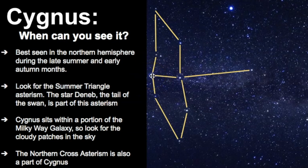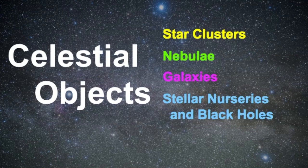In this video we're going to focus on the different types of nebulae, planetary nebulae, black holes, and other objects that are in the boundaries of this constellation. If you want to learn more about how to find this constellation in the sky, be sure to go visit that video. Now let's dive in and look at the celestial objects within Cygnus. We're going to break this down: first we'll start with star clusters, move on to nebulae, take a look at some of the galaxies within Cygnus, and then finally we'll look at some stellar nurseries and black holes. These are objects that would be invisible to the unaided eye, but with special scientific equipment we're able to see and detect them.